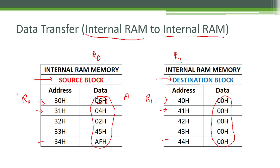We only need to copy 5 bytes from the source block to the destination block. To keep track of how many bytes we have copied, we use a counter stored in register r2 with the value 5. Whenever we copy a single byte from source to destination, this counter is decremented by 1. The program will execute 5 times so that all 5 bytes from the source are copied to the destination.